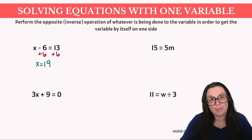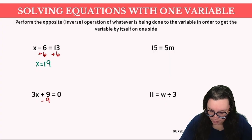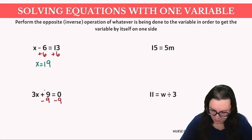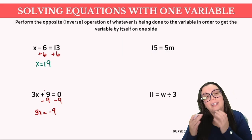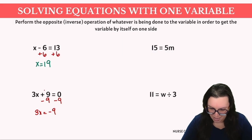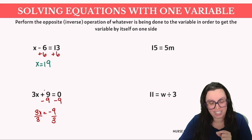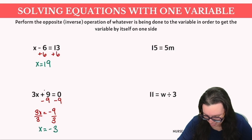In our next example, we have 3x plus 9 equals 0. We want to isolate x first, so we subtract 9 from both sides. Because we had a positive 9, we minus 9 in order to achieve 0. Once we do that, we get 3x equals negative 9. Now we need to again isolate x, so we divide by 3 on both sides to get rid of that coefficient. That gives us x equals negative 3.